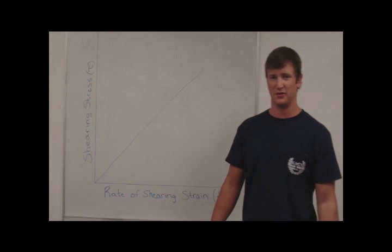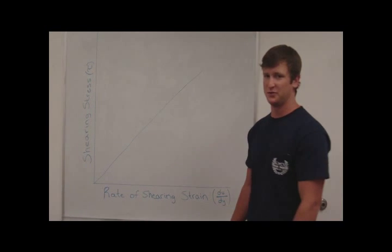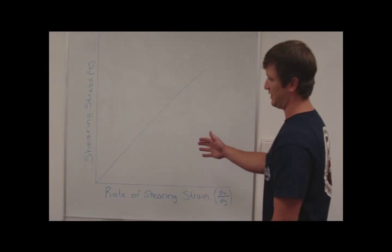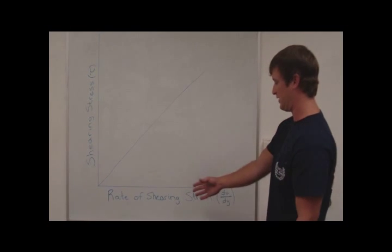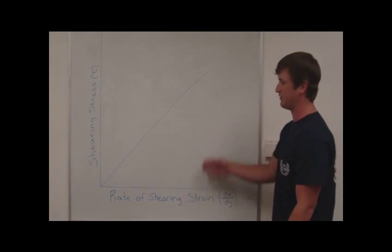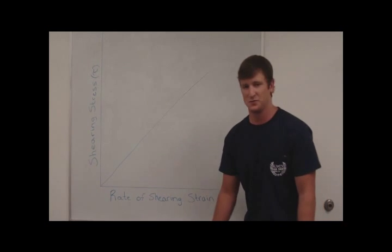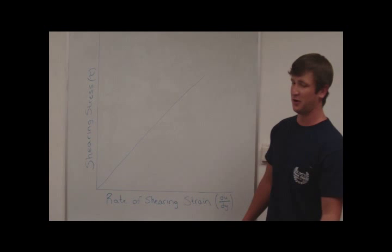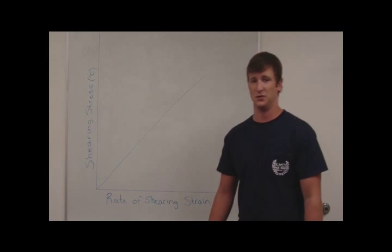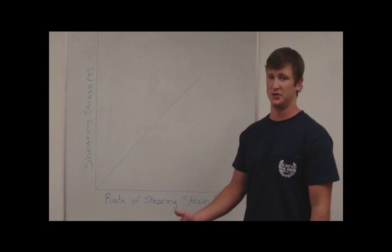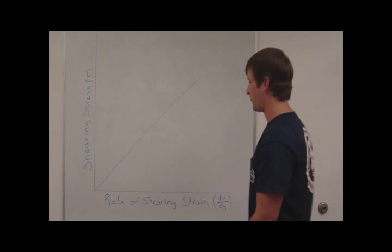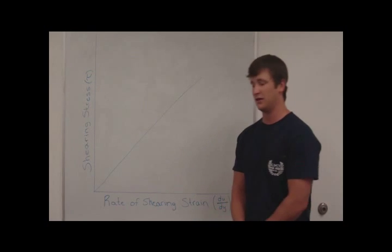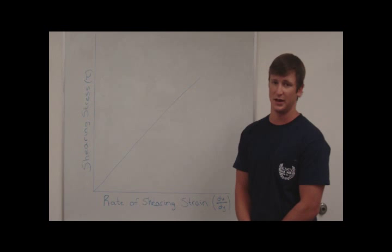The first type of fluids we're going to talk about are Newtonian fluids. Newtonian fluids are any fluids in which the shearing stress, tau, is linearly related to the rate of shearing strain, du dy, as shown here on this graph. This means that the fluid continues to flow no matter what forces are acting upon it. The viscosity of these fluids depends on the temperature and pressure, not of the forces acting upon it. Examples of Newtonian fluids are water and most gases.